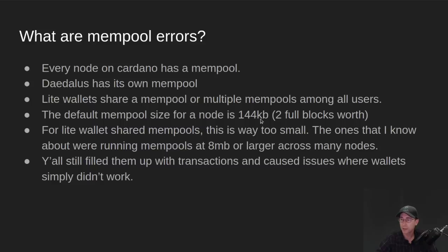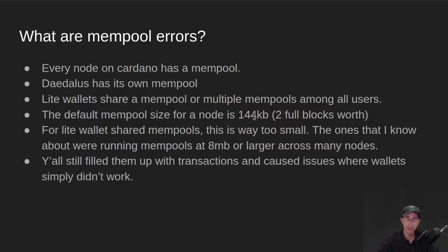The default mempool size for a node is 144 kilobytes. That's two full blocks worth of data. And for a very long time, that was just fine. Most nodes still run with this and they do okay. So most relays, most block producers — it's smart to just run with 144 kilobytes of mempool size, and they will do just fine.